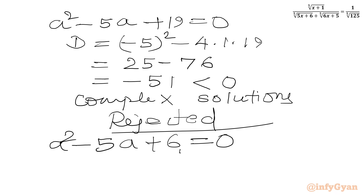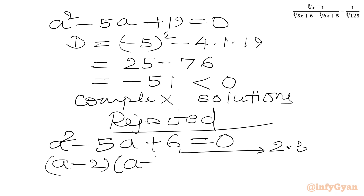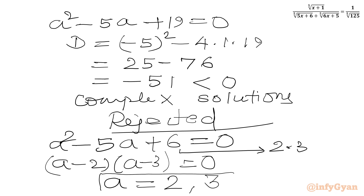Now we consider the first quadratic from ab equals 6: a² minus 5a plus 6 equals 0. The factors of 6 are 2 times 3, and they add to give the middle term 5. Factoring gives (a minus 2)(a minus 3) equals 0. So a equals 2 or a equals 3.